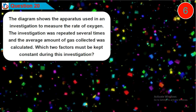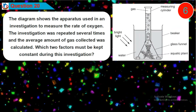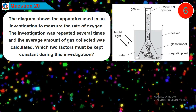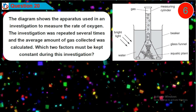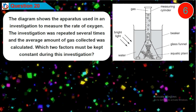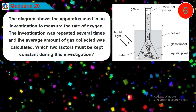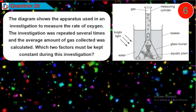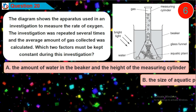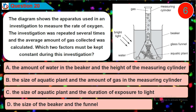Question twenty: the diagram shows the apparatus used in an investigation to measure the rate of oxygen production. The investigation was repeated several times and the average amount of gas collected was calculated. Which two factors must be kept constant during this investigation? Is it option A, B, C, or D?